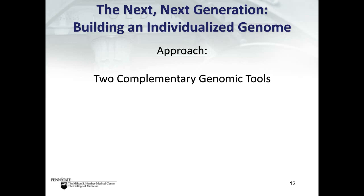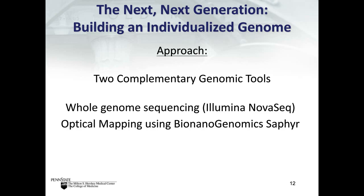To address this, two complementary genomic tools were used to catalog genetic variations associated with leukemias. The first is whole genome sequencing performed on the Illumina NovaSeq platform, and the second is optical mapping using BioNano Genomics Sapphire or Iris instruments.